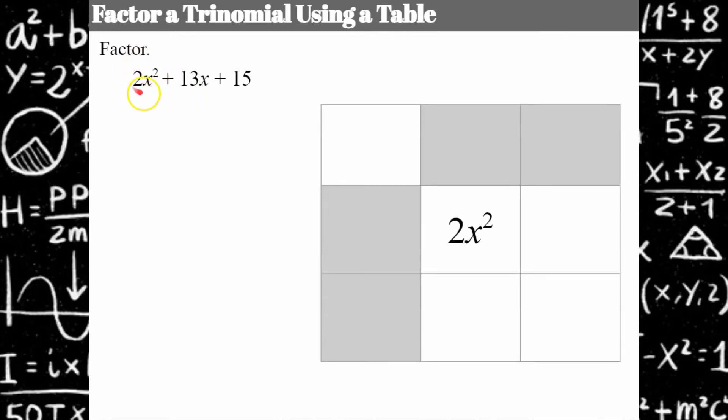The first thing I recognize from learning how to use this multiplying a binomial times a binomial is that this first cell has to equal 2x² and the bottom cell has to be equivalent to 15. What we're trying to do is find out what goes in these gray boxes, which will end up being the factors.